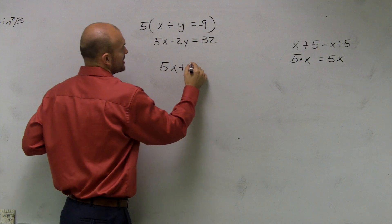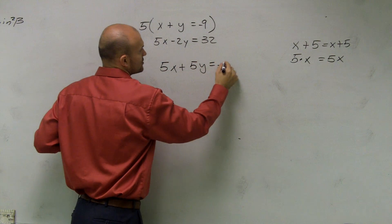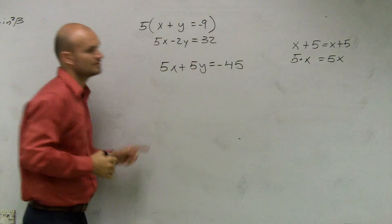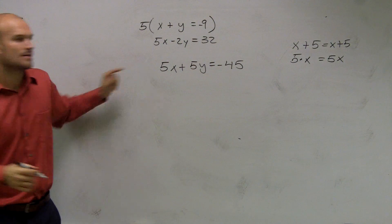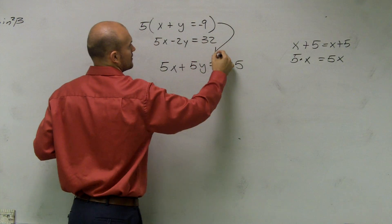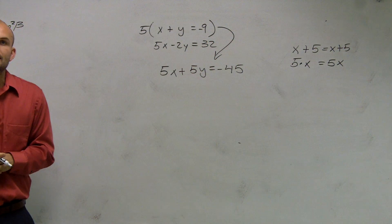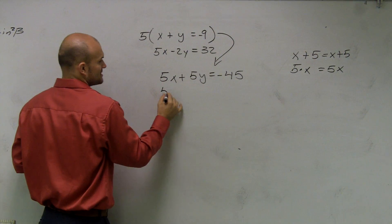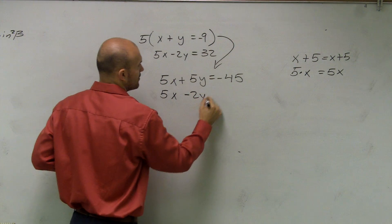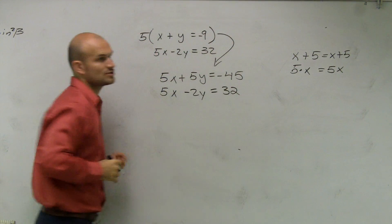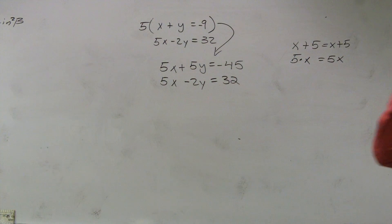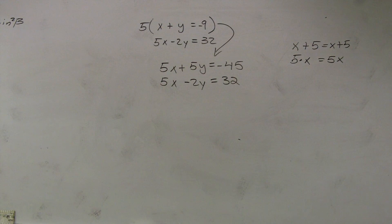Therefore, now I get 5x plus 5y equals negative forty-five. Does everybody see what I did there? When I multiply by five, now produces this equation. Then I'll have this, 5x minus 2y equals thirty-two. You really need to be writing this down because this is going to be something you're going to be able to follow.